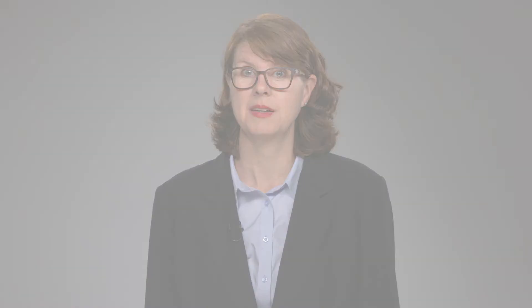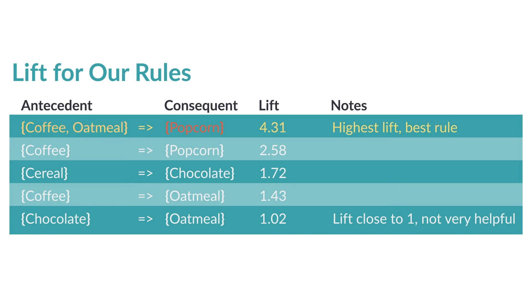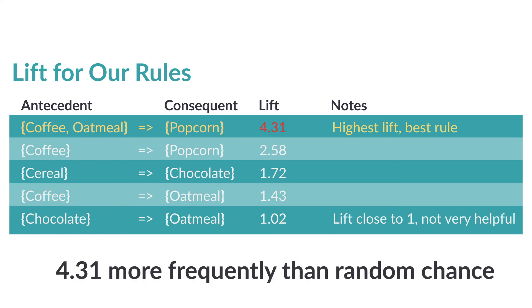We can calculate the lift of our rules and put those in a table as well. This table shows that our first rule — when a customer already has coffee and oatmeal in the cart and then adds popcorn — has a lift of 4.31. This implies that this combination happens 4.31 times more frequently than one would expect by random chance. We like to sort our rules by lift so that the best ones float to the top.